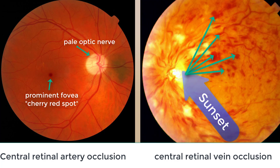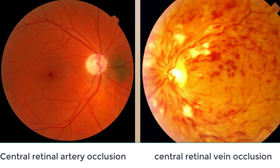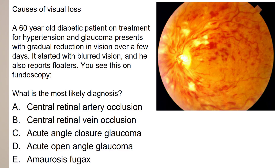It looks a lot more like this. In terms of the history, the key clues from the question: this patient had risk factors for central retinal vein occlusion — he had glaucoma, known hypertension, and is diabetic. These are all risk factors for this condition. The other big clues are that this came on fairly gradually over two or three days. Central retinal artery occlusion is almost always very sudden. He also had floaters as well as blurred vision and loss of vision — typical features of central retinal vein occlusion.